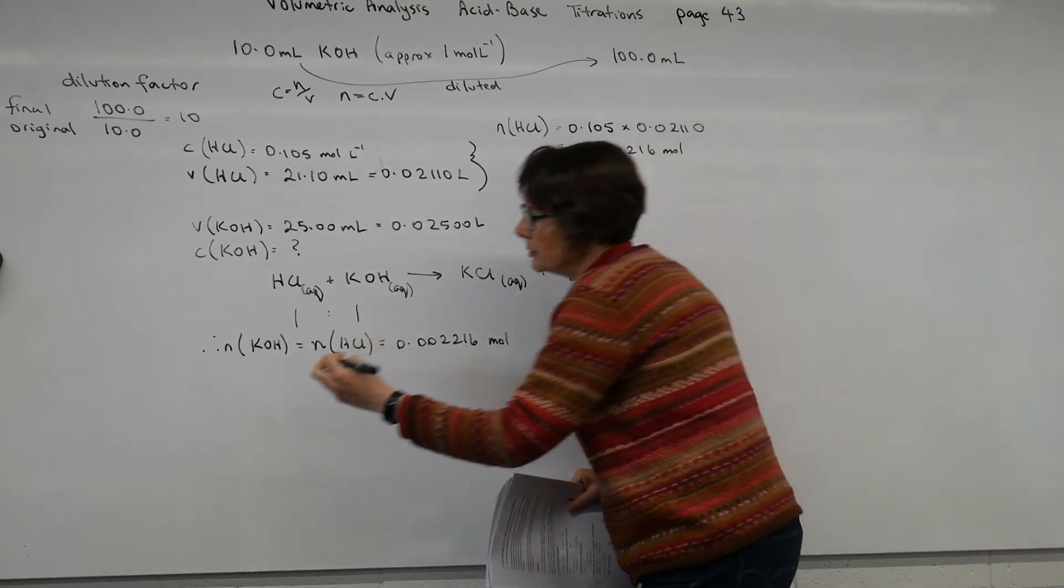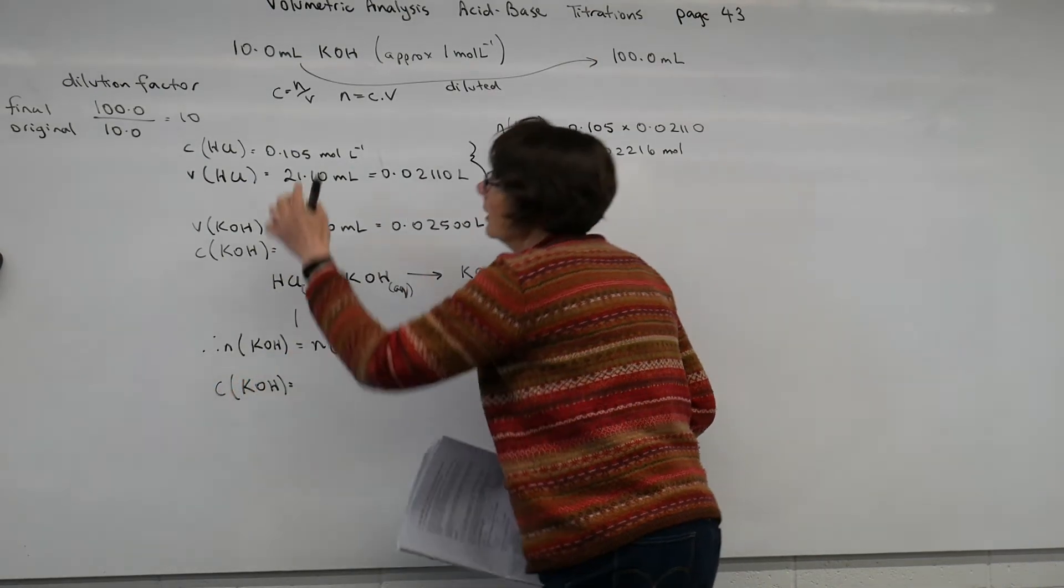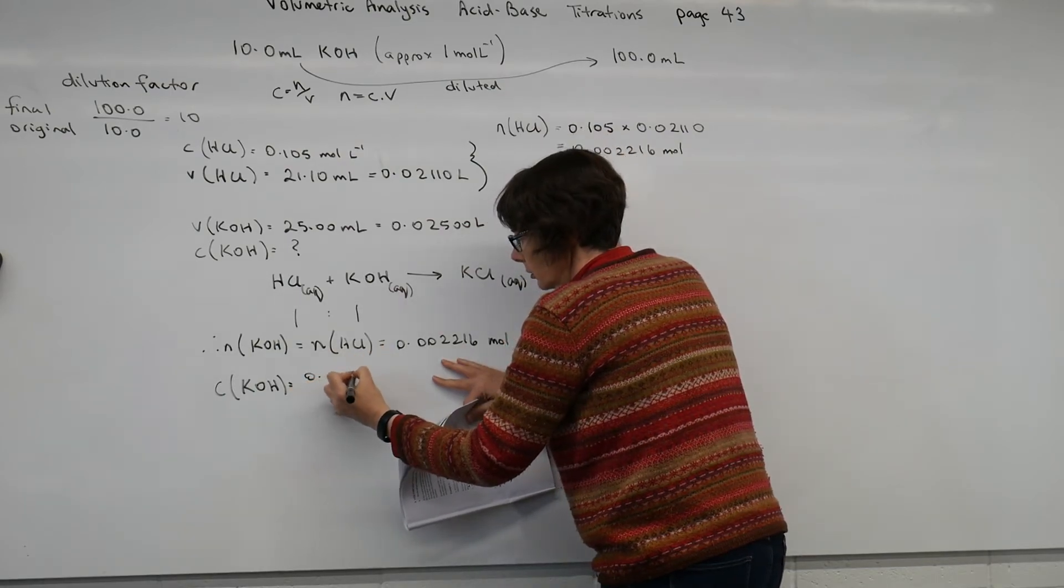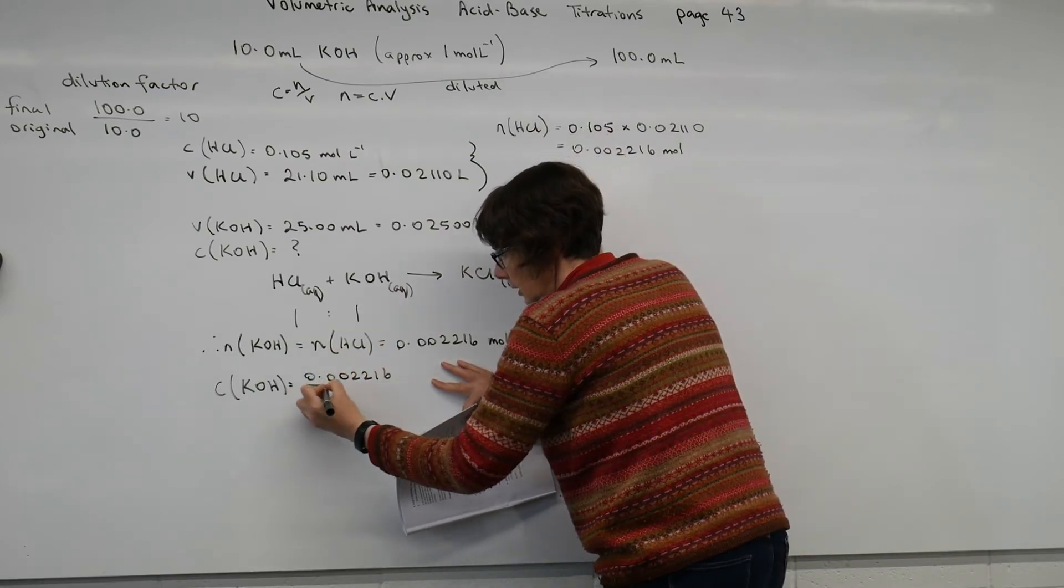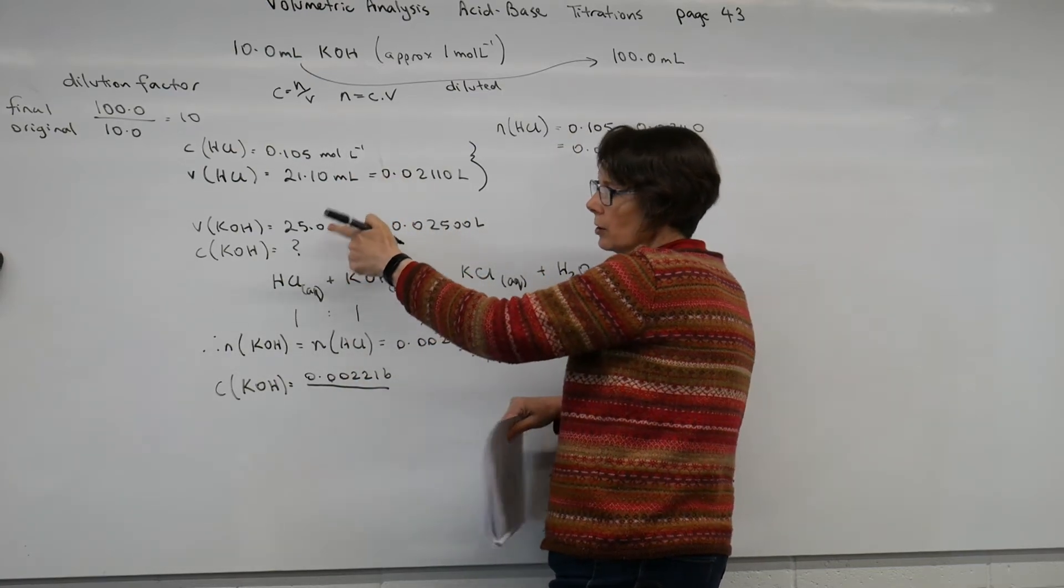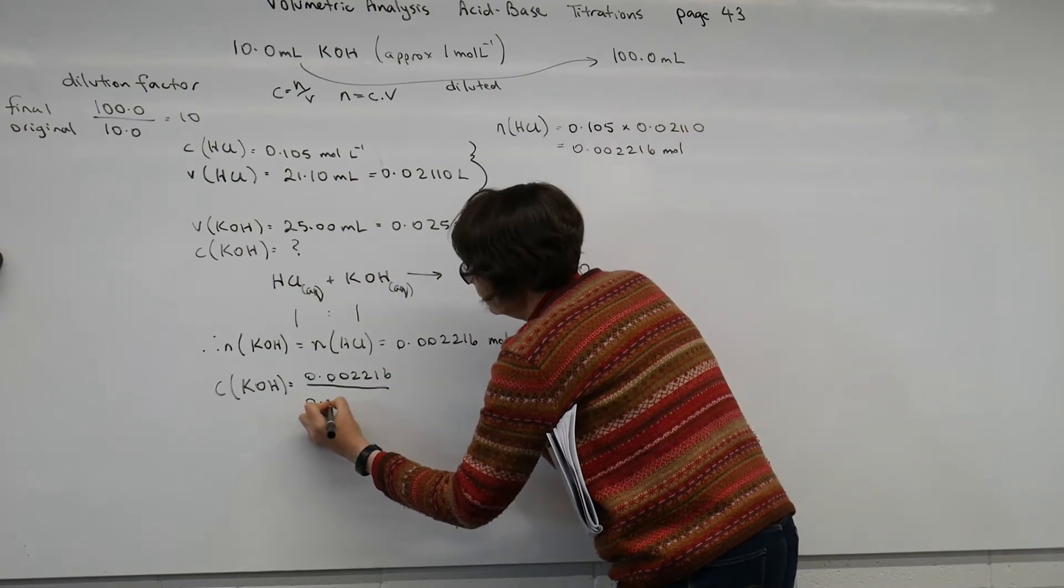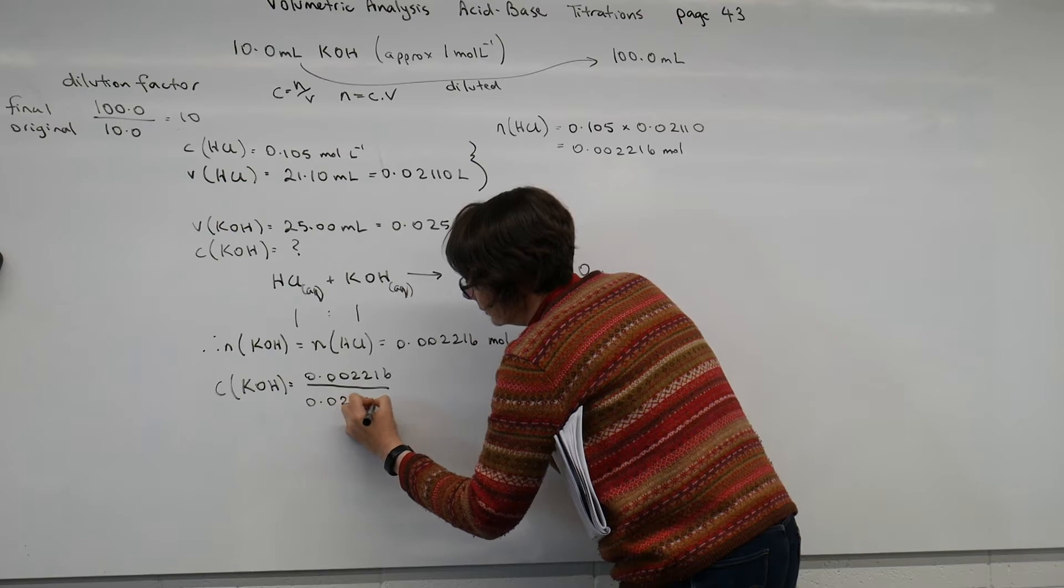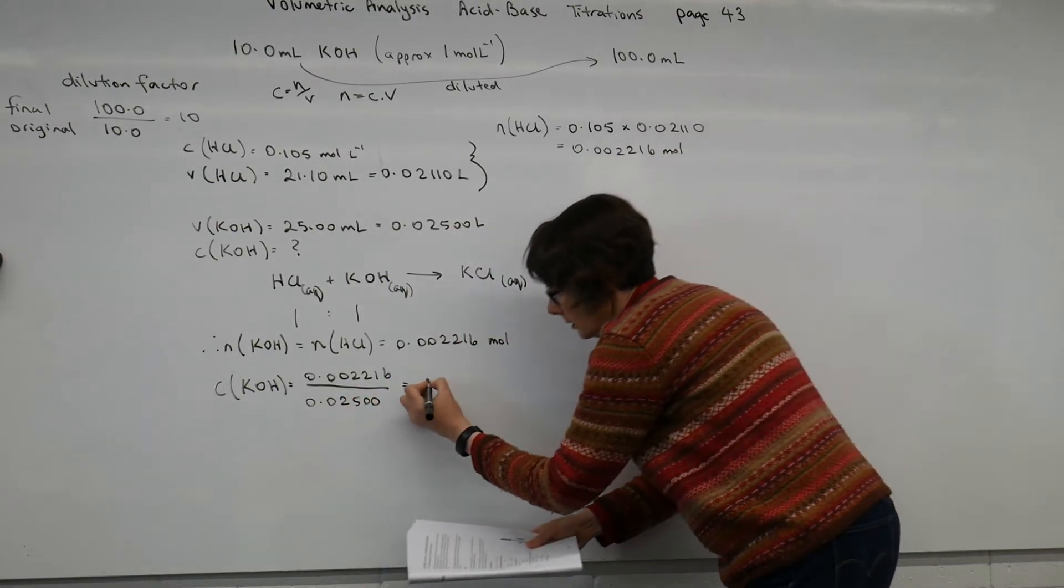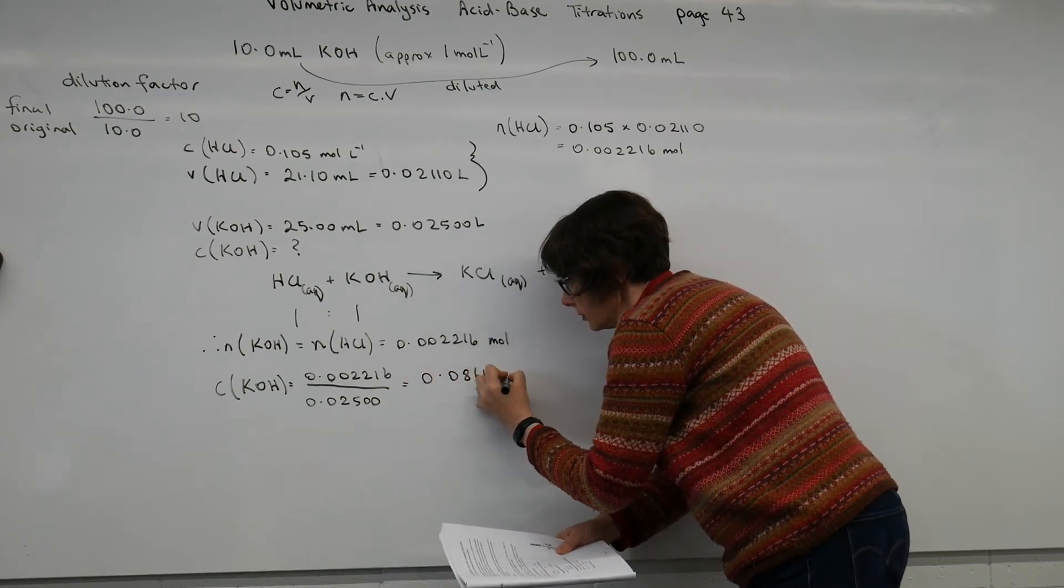Now I have the moles in 25ml. And to work out the concentration of my potassium hydroxide, it's the moles, 0.002216, divided by the volume, which is the volume of potassium hydroxide, 0.02500. 0.0866 moles per litre.